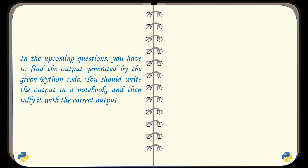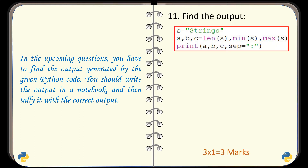In the upcoming questions, you have to find the output generated by the given Python code. You should write the output in a notebook and then tally it with the correct output. Here is question number 11. A code is given — find the output generated by this code. And the answer is this one.